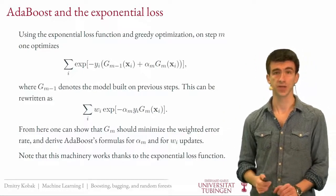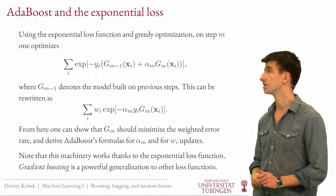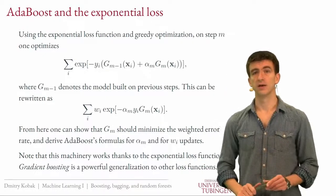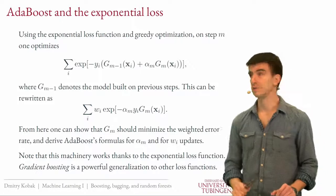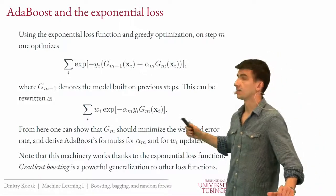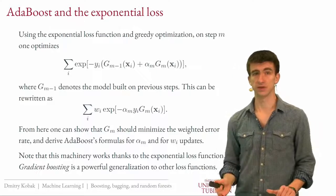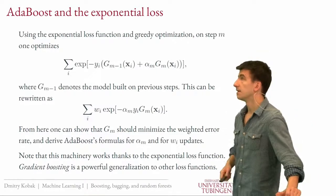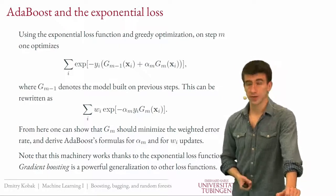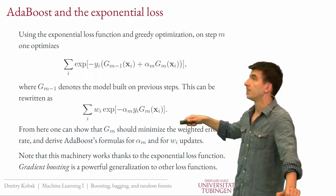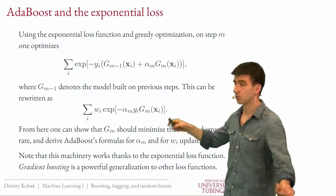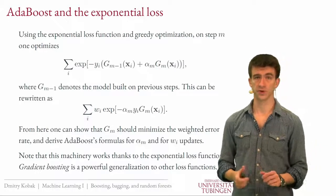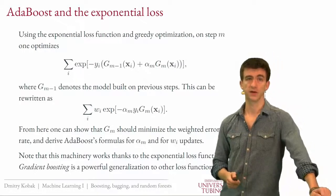The entire AdaBoost machinery works thanks to the exponential loss function because it allows this factorization trick. In fact, one can generalize this: using other loss functions — such as the squared error loss or the logistic regression loss — instead of the exponential loss no longer gives AdaBoost, but generalizes to something called gradient boosting, which is also a very useful family of algorithms.